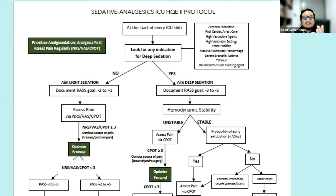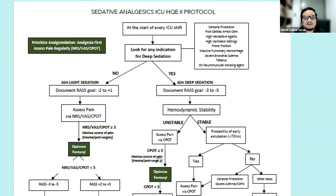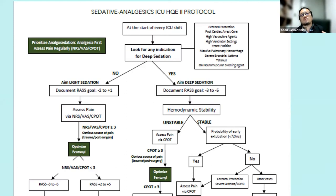At the next shift, if vasopressors are coming down, ventilator settings are improving, and there are no further indications for deep sedation, transition to light sedation. Document target RASS minus two to plus one, assess pain, optimize fentanyl, then reassess RASS.